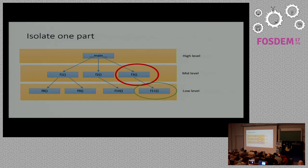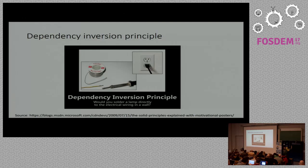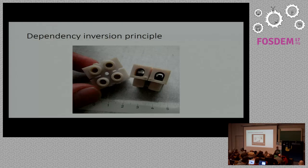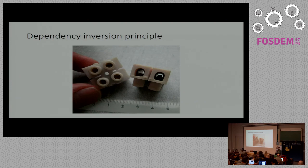We want to find a way to reuse F3 and maybe put something else underneath — to pull the logic of F3 out of this application and put it in a completely different context. That's what the Dependency Inversion Principle tries to solve. I found this picture: would you solder a lamp directly to the electrical wiring in a wall? Of course not. If we want to connect a lamp to electricity, we think of an interface — something like a connector. This allows us to replace the lamp, or if we want to connect it to a different power supply like a battery, we can replace the power supply as well. We think of an interface between those two components.